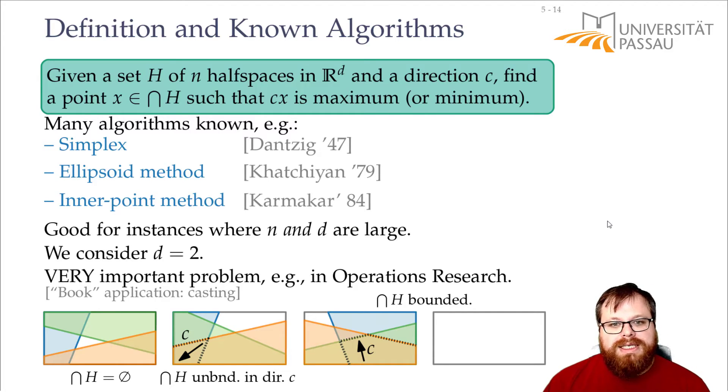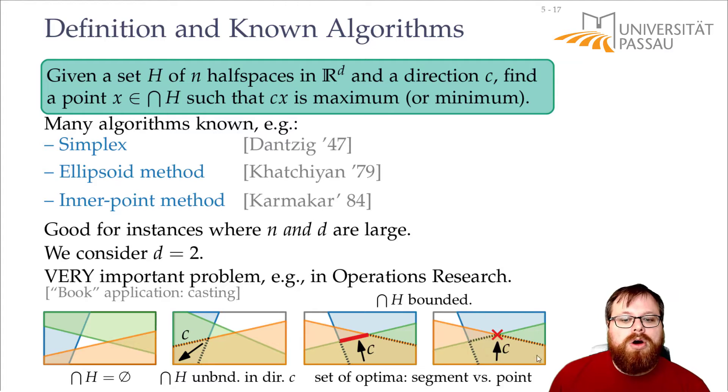Then there are still two cases because either the optimal can be a whole segment like here each of these points is an optimum solution or it can be a single point. If we rotate c slightly now this point is better than all the others. So either no solution or infinity or a segment or a single point.